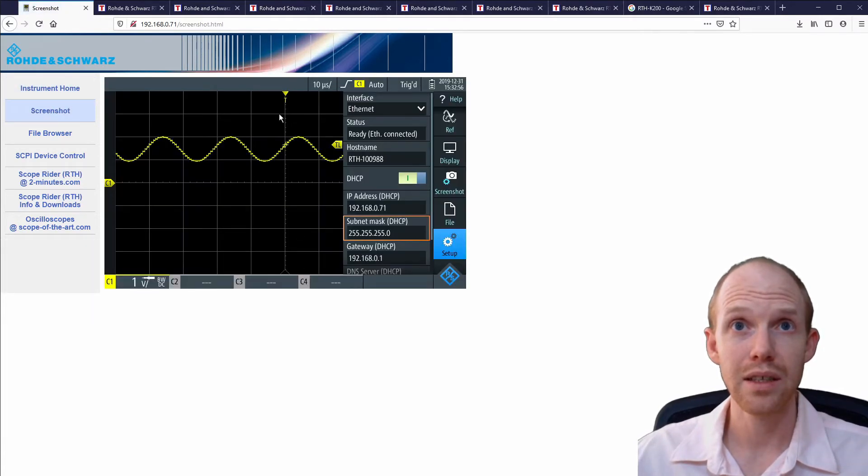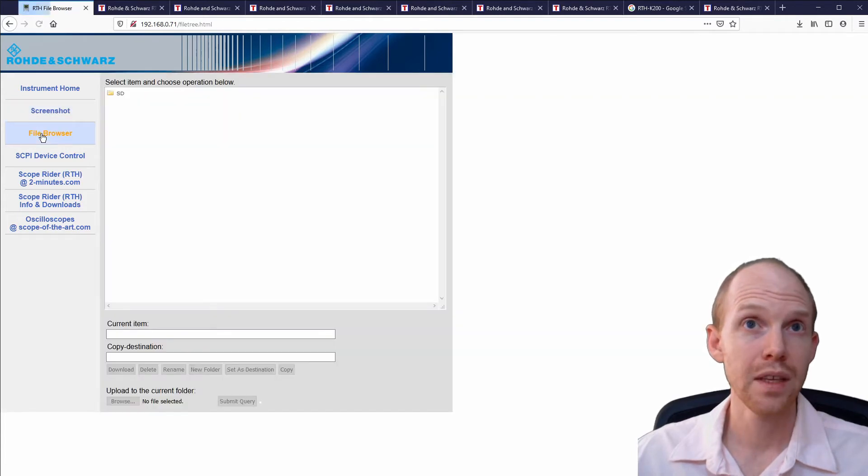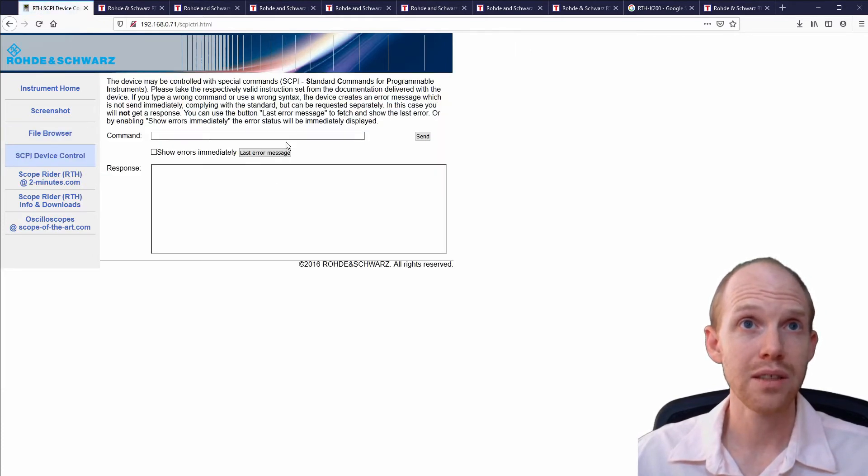Click on screenshot, and you get the current screenshot, and then you have this file browser here. I'm not sure exactly how that works. This here is where you can write SCPI commands to test them out directly to it, and then these other things are just links to their website.